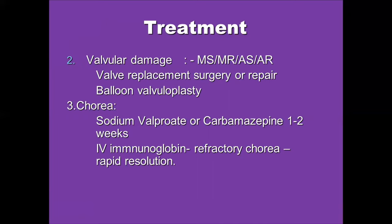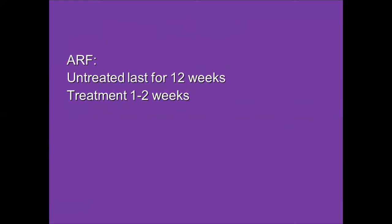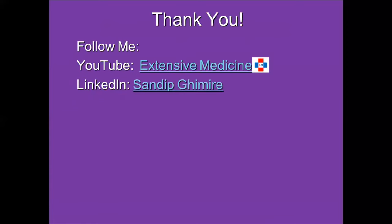Treatment of chorea is done using sodium valproate or carbamazepine for one to two weeks; in refractory cases, IV immunoglobulin has been found to cause rapid regression. Regarding prognosis, untreated disease lasts about 12 weeks, but with proper treatment, the disease course can be reduced to one to two weeks. Proper treatment not only reduces disease duration but also decreases the chances of developing rheumatic heart disease — the most important complication — which is ultimately the primary goal of treating acute rheumatic fever.